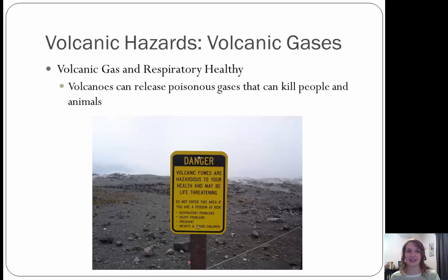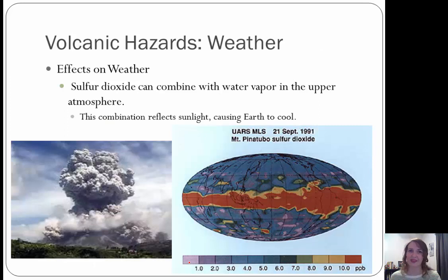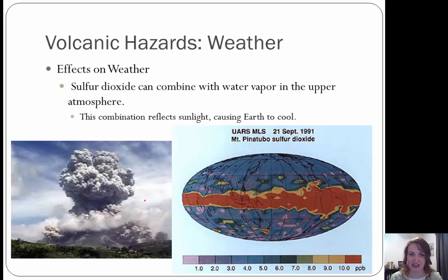Volcanic gases can affect respiratory health because they can release poisonous gases that kill people and animals. Volcanic gases also have effects on the weather: sulfur dioxide can combine with water vapor in the upper atmosphere, and this combination reflects sunlight, causing Earth to cool. For example, Mount Pinatubo's sulfur dioxide was over 10 parts per billion — elevated levels were carried by the jet stream, reflecting sunlight and causing a cooling effect through that region.